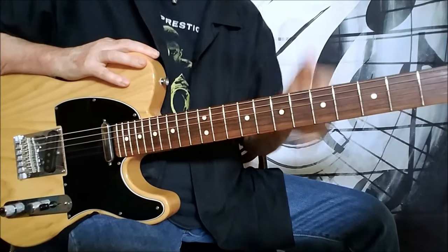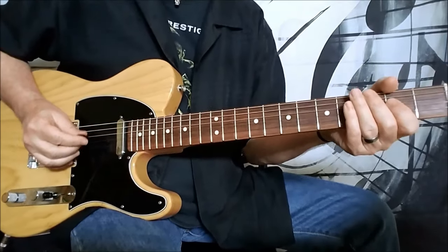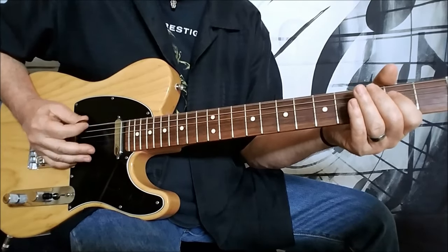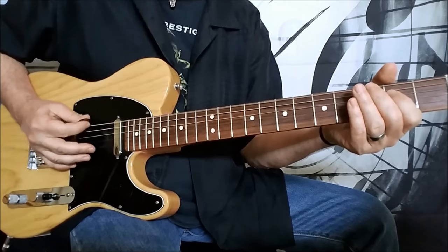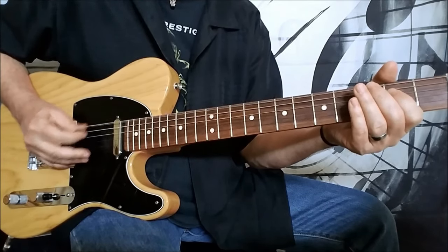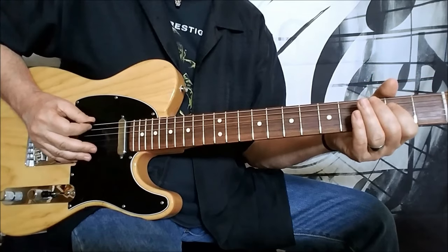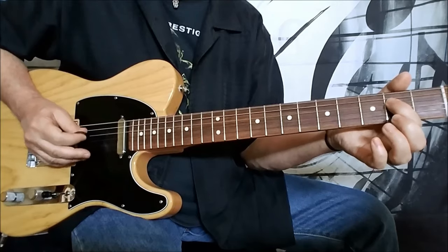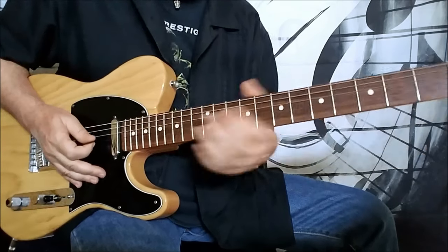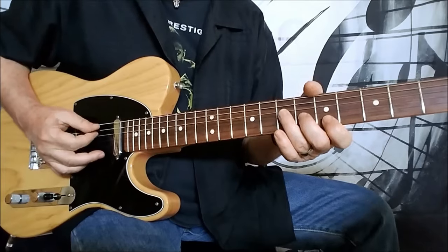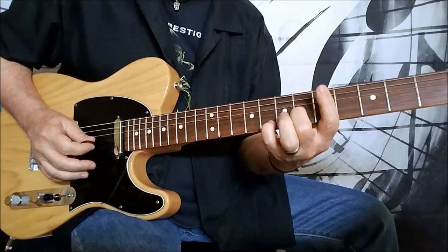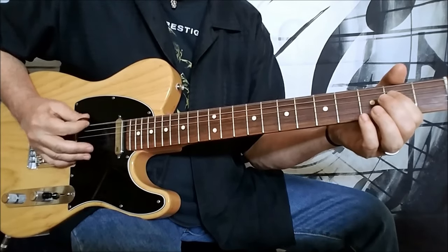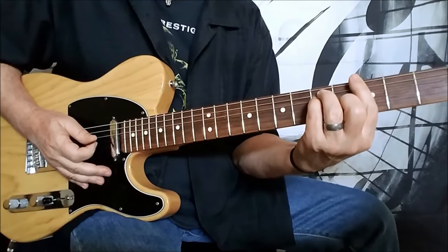So then the keyboard solo comes up, and basically he's kind of vamping behind the keyboard with a little bluesy thing. Top E string, and the 2nd fret on the D string. And then again, he plays that little pattern. So that's kind of cool. And then he comes back to it.